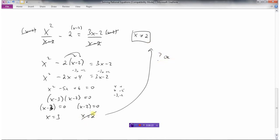x cannot equal 2. So I have to reject this solution because it's one of my non-permissible values. But this one's okay. And so we will have one solution, x equals 3.